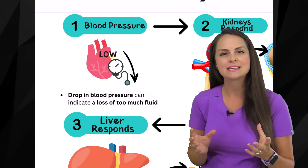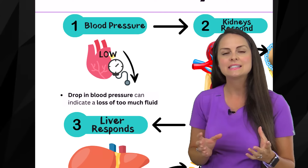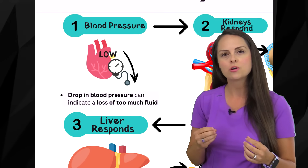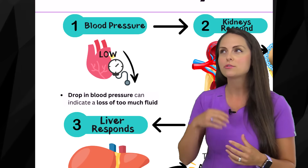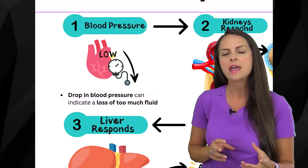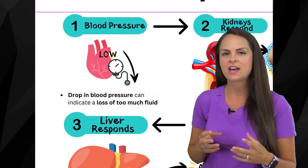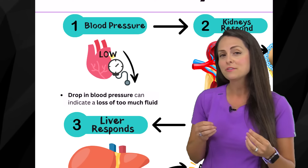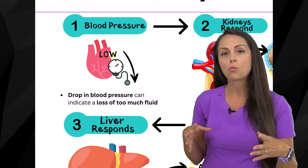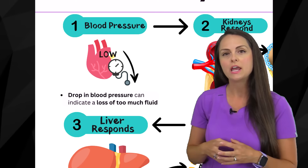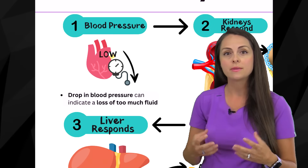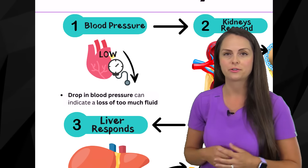How it does this is it gets angiotensin 2 involved, which is a hormone that's also going to stimulate other hormones, such as aldosterone and ADH — that antidiuretic hormone. And those hormones are going to add more water to your blood to help increase blood volume, hence increase blood pressure.